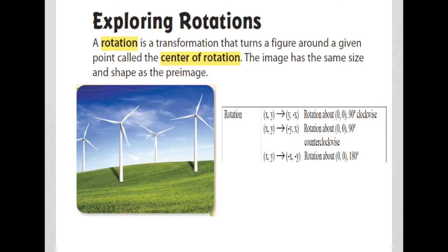Think of windmills — there are some in Texas, some in California if you drive to Los Angeles, some right outside of Fort Worth. These windmills, depending on how they turn, are the same size and shape, but as they turn the actual position will be different. That's a good real-world example of rotation.